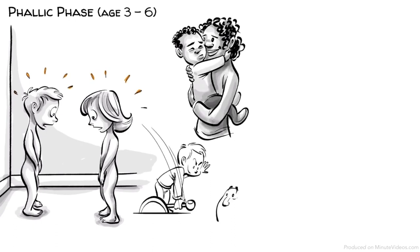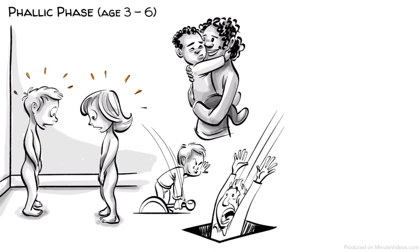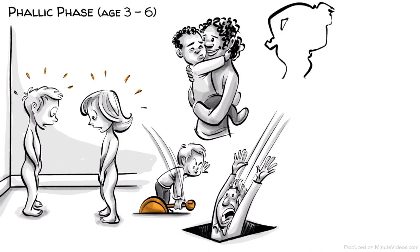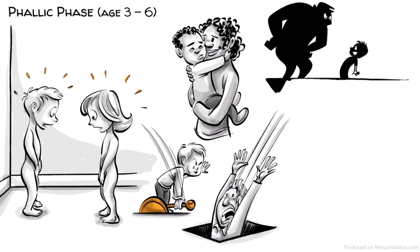Ernst and Hans desire to possess their mother and fantasize about getting rid of their father. But they know that their father is stronger and fear being punished for their desire. Freud called this castration anxiety.